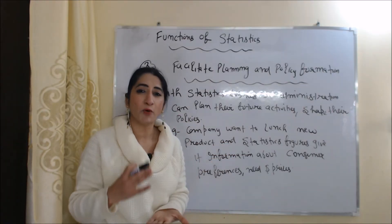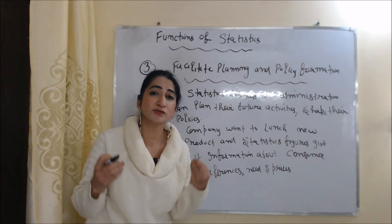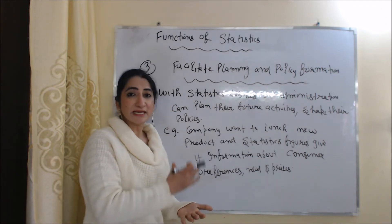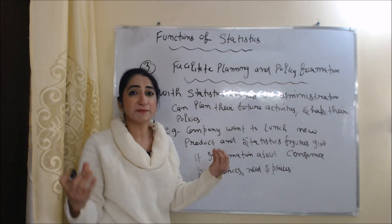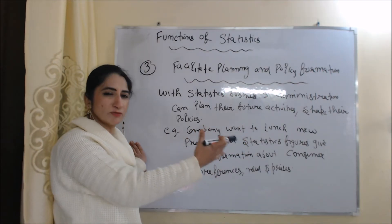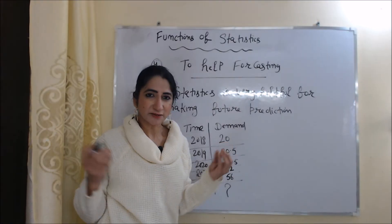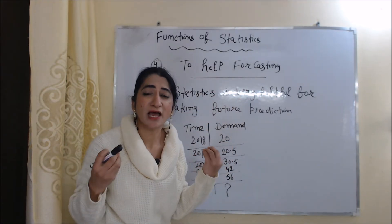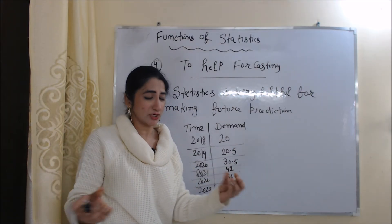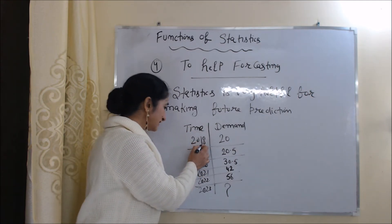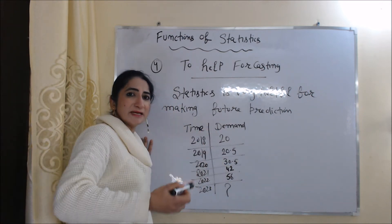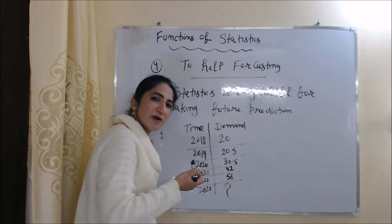The third function is to facilitate planning and policy formation. Statistical figures give us information about past and current scenarios, and with this information, businesses and administrations can plan future activities and shape their policies. For example, a company wanting to launch a new product can use statistical figures about consumer preferences, needs and prices. The next function is to help forecasting — statistics are very helpful for making future predictions. From a figure showing demand continuously increasing from 2018 to 2022, a businessman can easily estimate that demand will also increase in future.